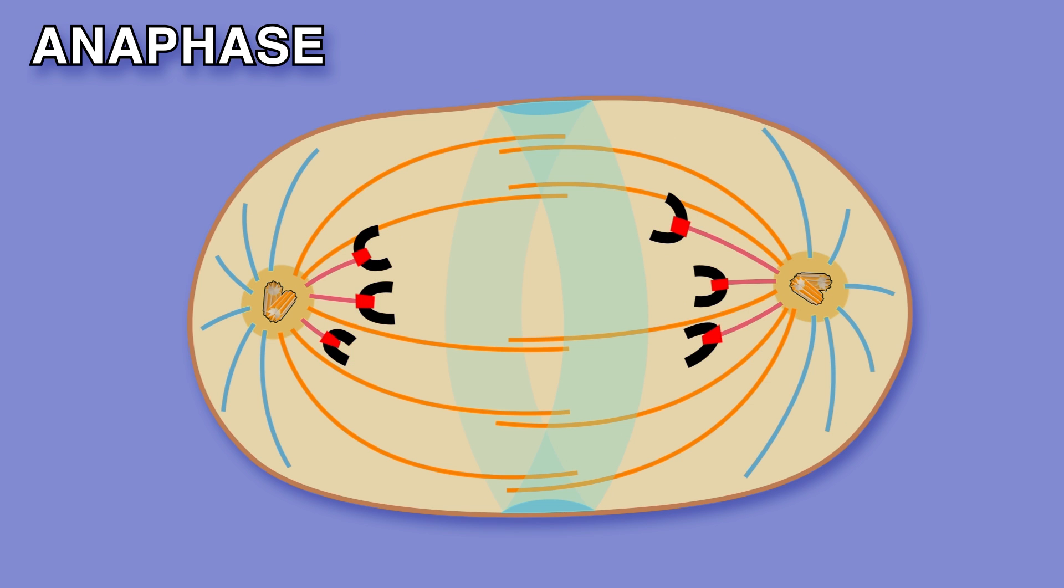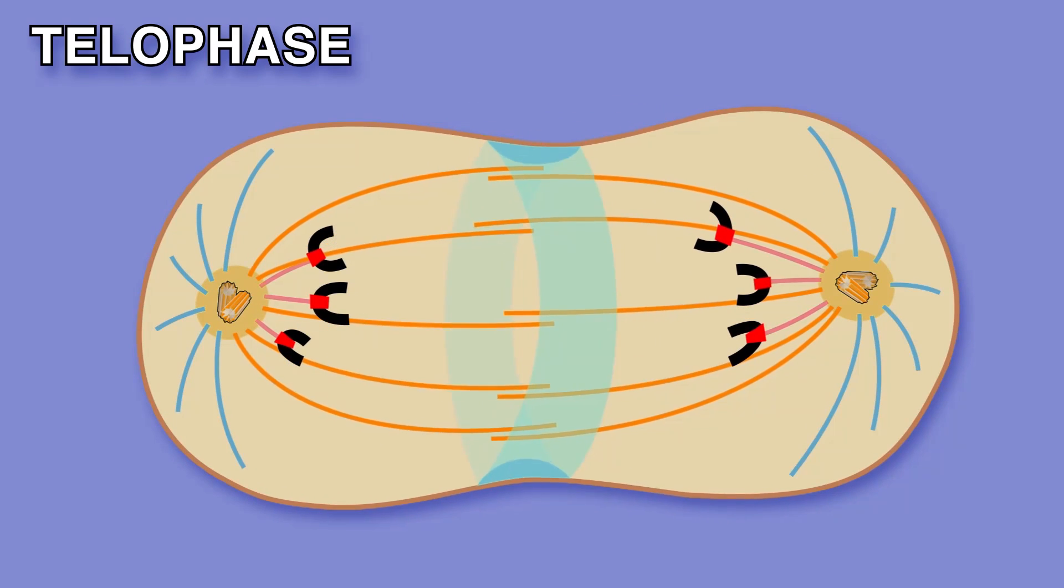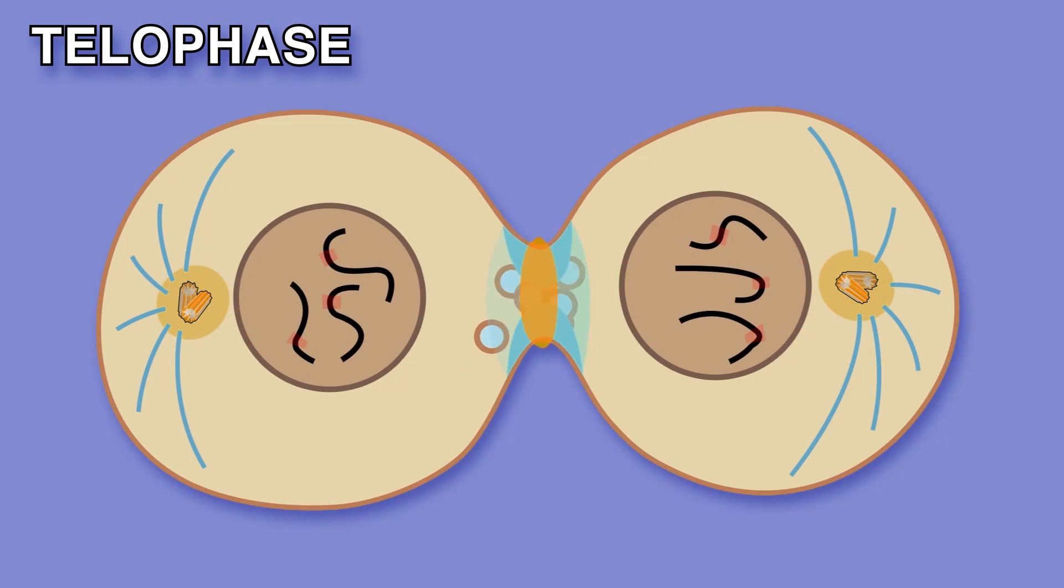Now the last stage of mitosis, telophase, can commence. Daughter chromosome sets arrive at spindle poles and decondense. Nuclear envelopes assemble to make the genomes discrete. Two nuclei form and then mitosis is complete.